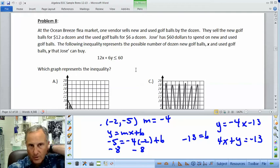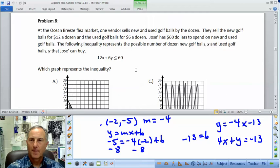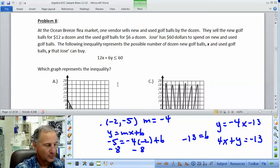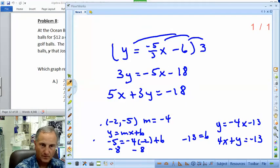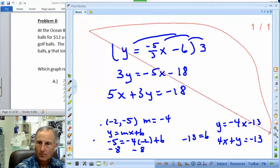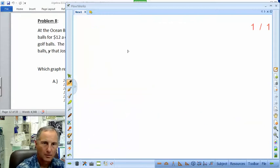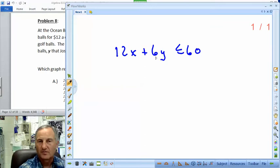Problem 8. At Osha Breeze Flea Market, one vendor sells new and used golf balls by the dozen. They sell the new golf balls for $12 a dozen and used for $6 a dozen. Jose has $60 to spend on new and used golf balls. The following inequality represents the possible number of dozen new golf balls, X, and used golf balls, Y, that Jose can buy. All of this, but they give you the equation, so don't be thrown off because, oh, it's a work problem. They give you the equation. Which graph represents this? Well, let's take a look here. 12x plus 6y less than or equal to 60, so we know we're going to shade down. Let's get this cleared off here. When we did problems like this in class, and I've already done it, it's in standard form. We used x and y-intercepts. We did this on an earlier problem.